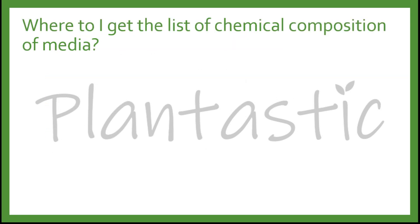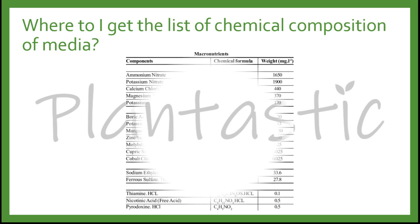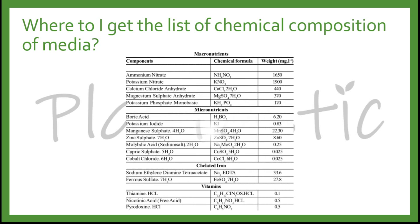Where do I get the list of the chemical compositions? The chemical compositions of the media, you can get easily by searching for the chemical compositions of a certain media. For example, I will show you the Murashige and Skoog media here.